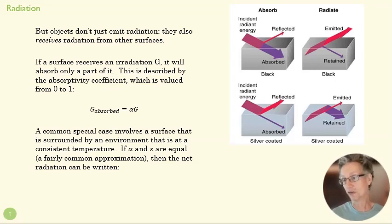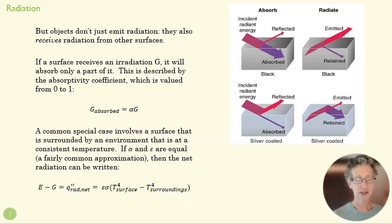So like a silver-coated mirror is going to have a really low alpha value here, which means it's not going to absorb very much energy, right? Or an aluminum foil or something like that. But a black t-shirt is going to absorb quite a bit of it. And oftentimes that alpha and that epsilon are similar values, and so we can simplify our equations.